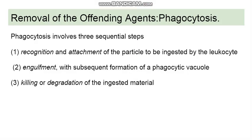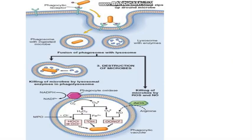Now moving to the phagocytosis part. Phagocytosis comprises mainly three steps: first, the cell has to recognize the particle to be phagocytosed; second is engulfment; and lastly is the killing of the particle. We have already discussed recognition, so now we will go to the engulfment part, then briefly discuss the killing of the ingested particle.